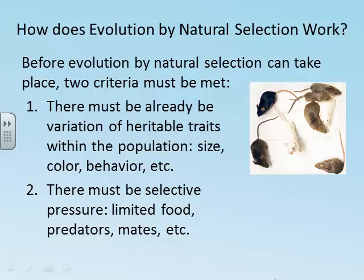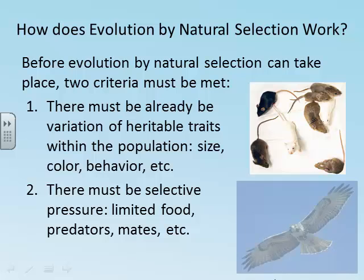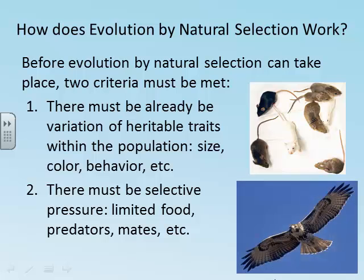However, few animals live in such a perfect world. Most have to compete for food and mates and or find ways to avoid being eaten. If this hawk flew over the mice on this white background, which mice would be the least likely to get eaten?